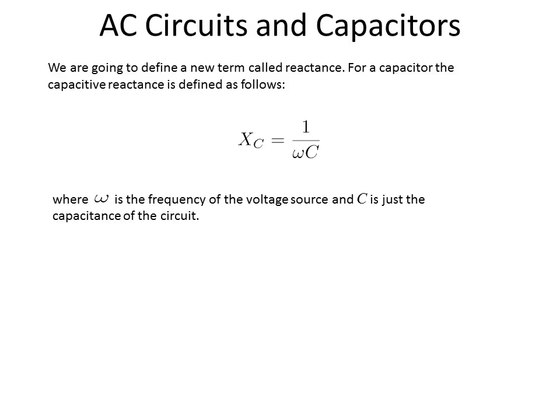C is just the value of the capacitance of the circuit. So this is what we've seen before in previous capacitors, where once the capacitor is made, it has a specific capacitance.